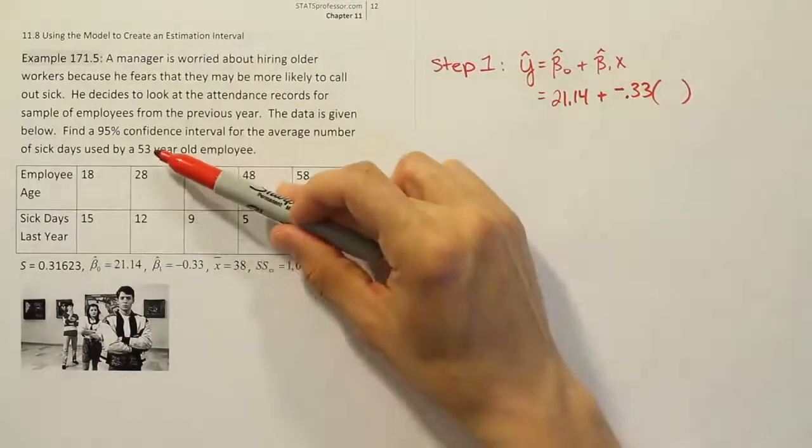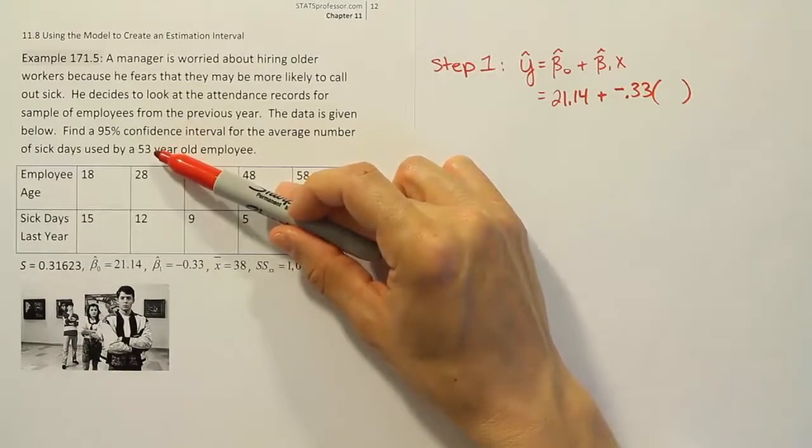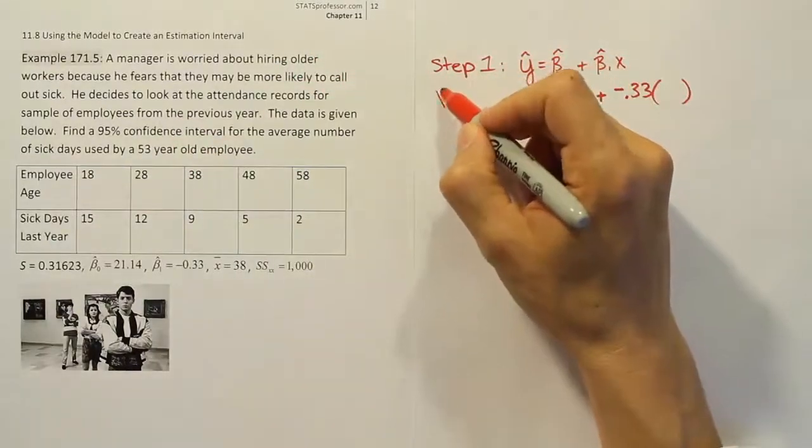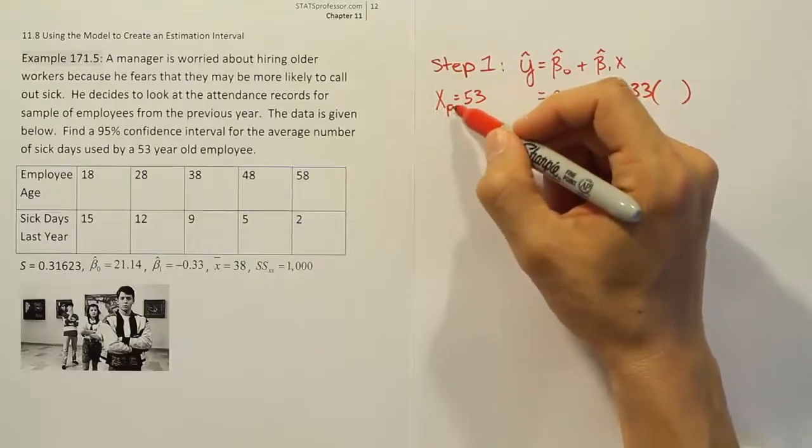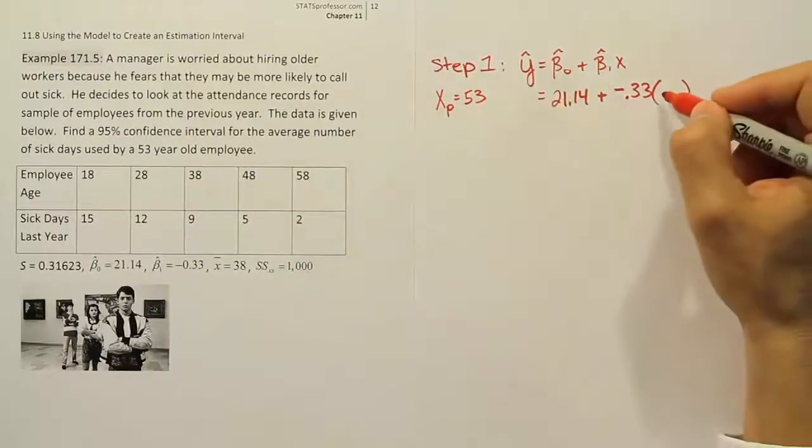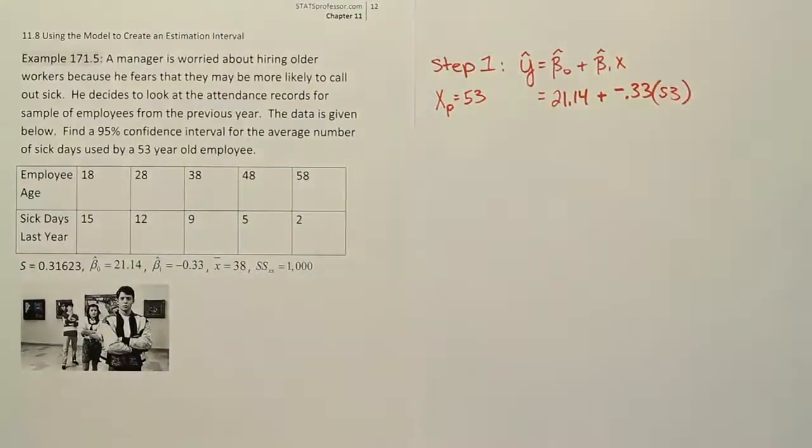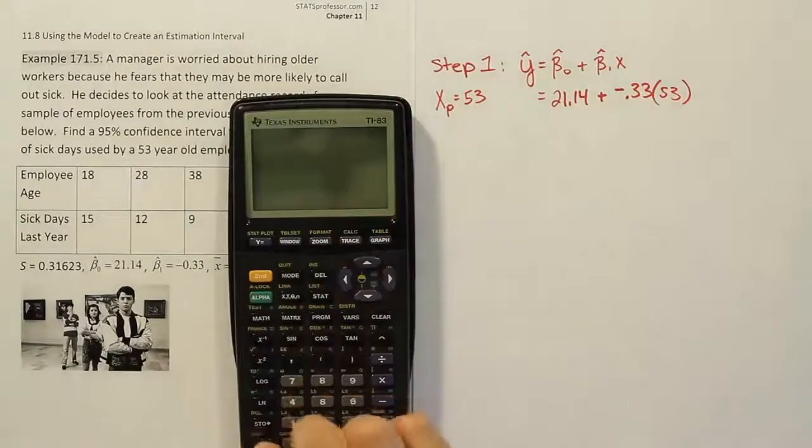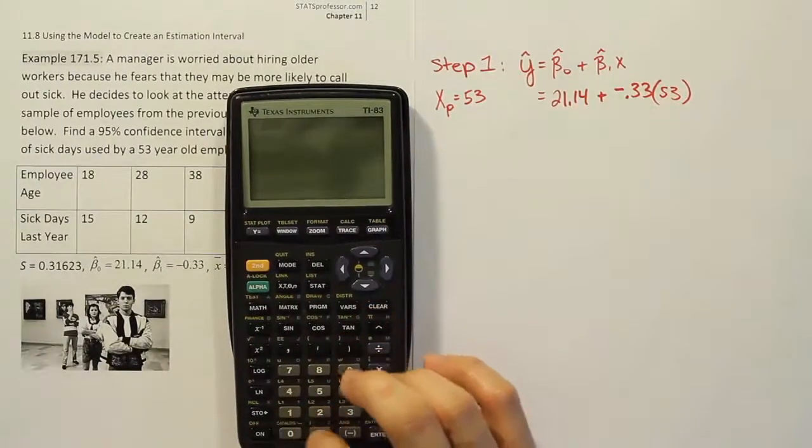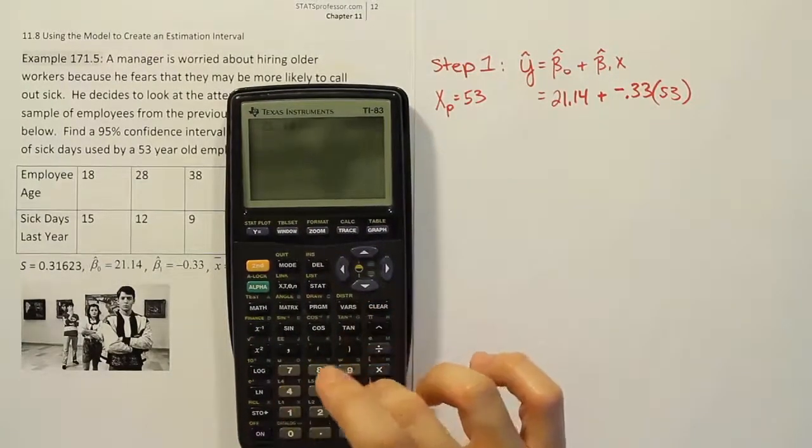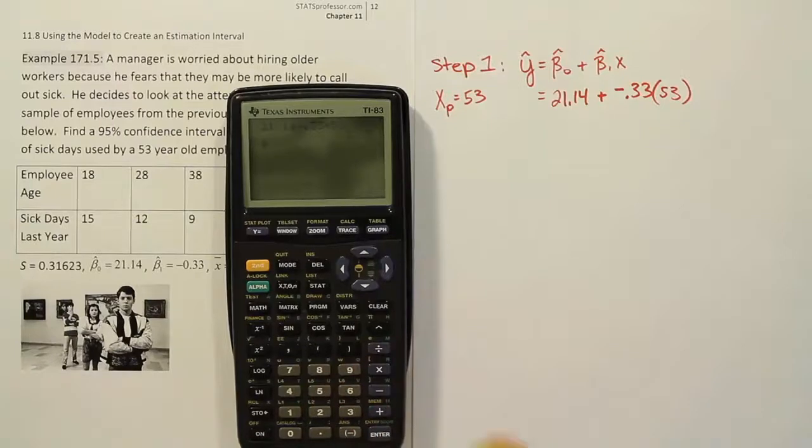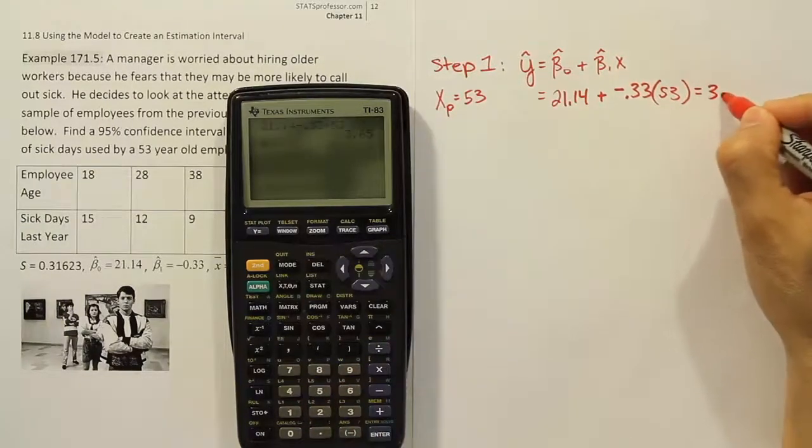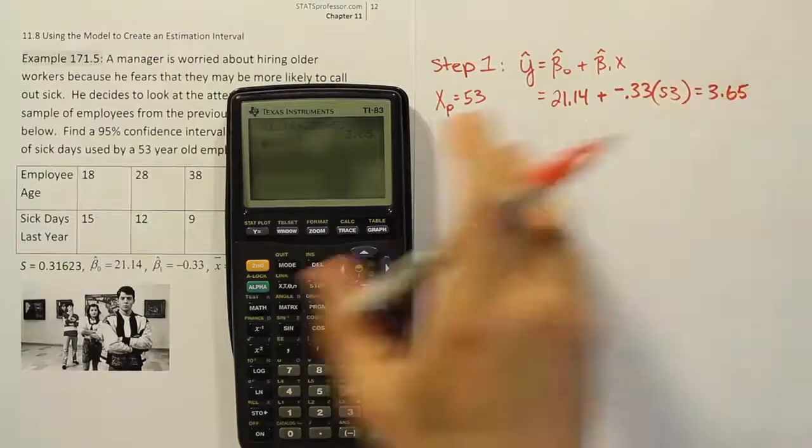We have an x value, so don't just put x. The x value is given to us in the problem. It's the 53 because that is the number we're asked to talk about. We're going to call that xp. So xp is equal to 53. We want to make our prediction for a 53-year-old person here. We'll have 21.14 minus 0.33 times 53, and we get 3.65.